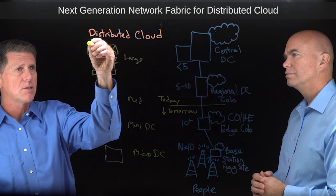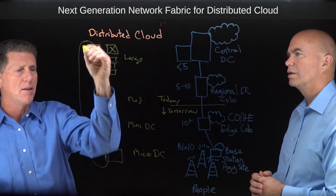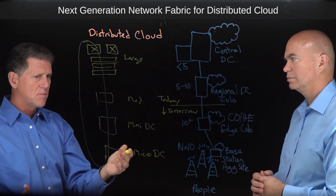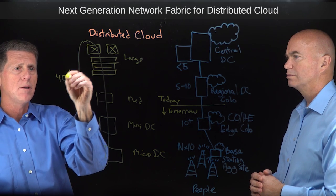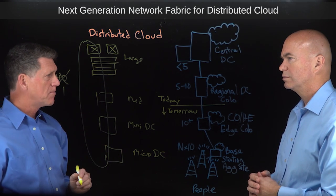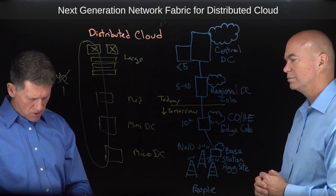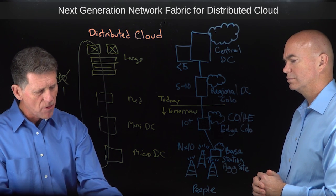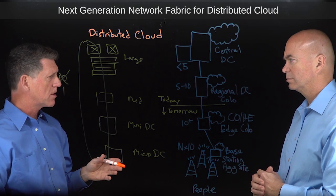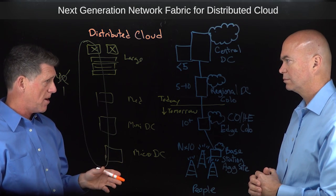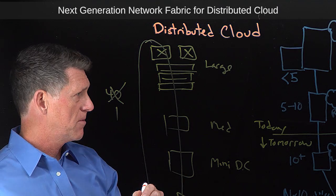What we're going to see is a fabric that stretches across all of this, and instead of, say, 40 switches, it's going to look like one. One of the important things about edge compute, in particular as driven by 5G, is network slicing — the ability to completely slice the network across management, data, and control planes.